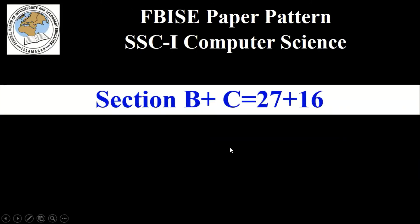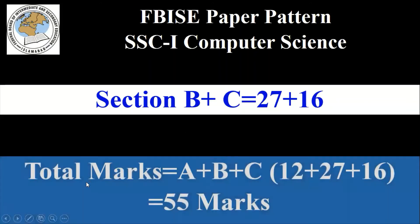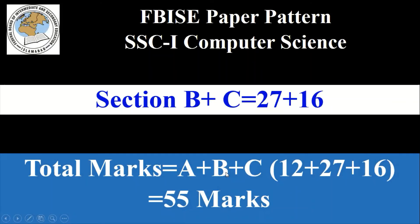To summarize how you will get 55 marks: Section B plus Section C gives 27 plus 16 equals 43 marks. Total marks equal Section A plus Section B plus Section C — that is 12 plus 27 plus 16 equals 55 marks. So total marks in computer science is 55, and this is the paper pattern of computer science for SSC 1 class.